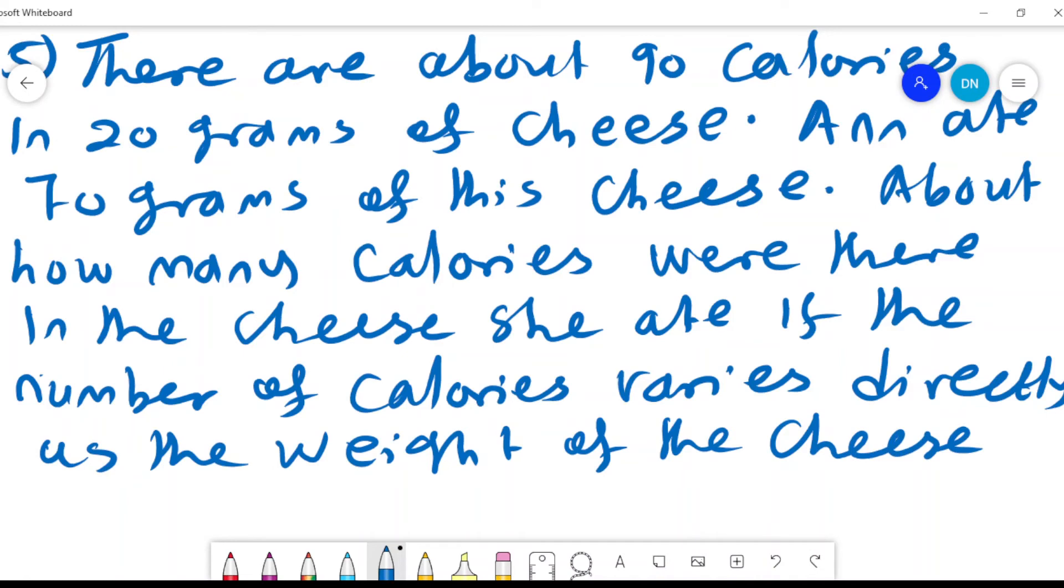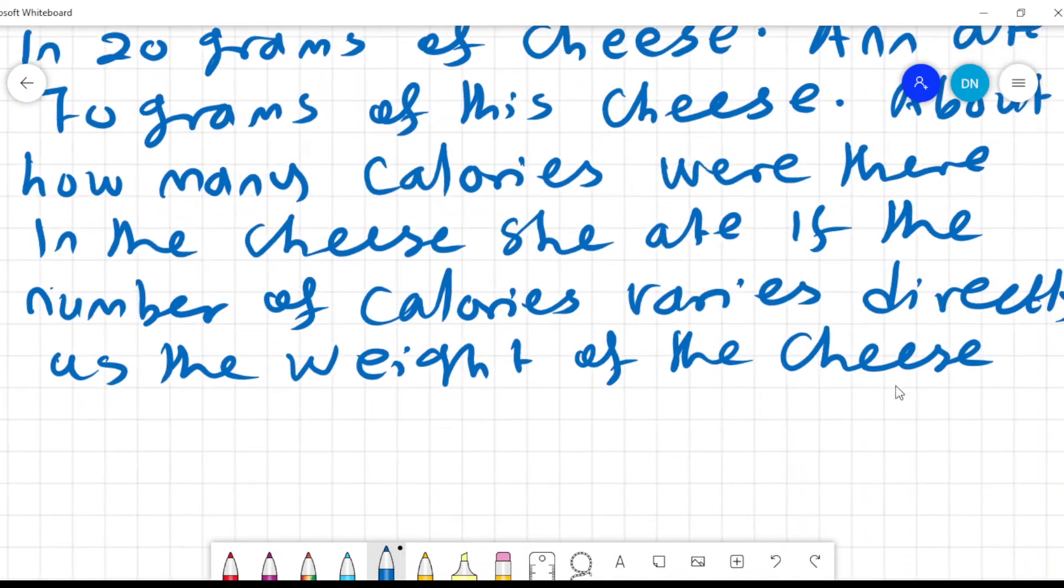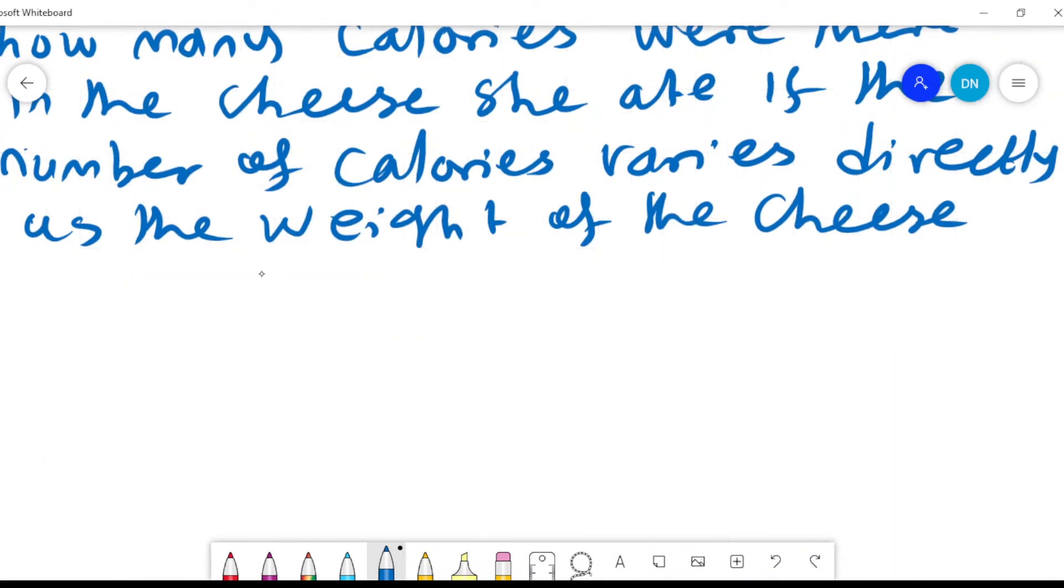There are about 90 calories in 20 grams of cheese. About how many calories were there in the cheese she ate if the number of calories varies directly as the weight of the cheese? For every 20 grams we have 90 calories. That's the solution we want to find.